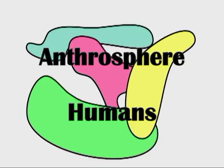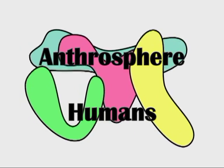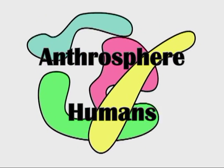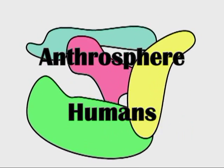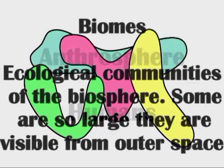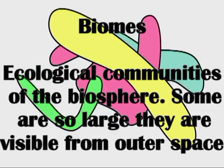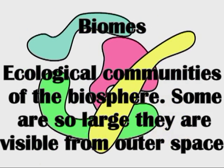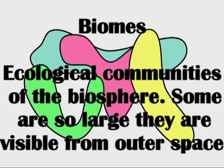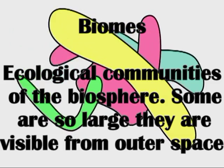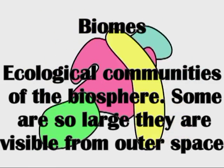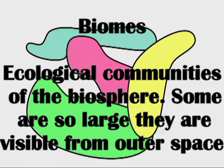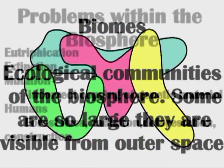A subsphere of the biosphere is the anthrosphere, which includes all of the humans. Biomes are the ecological communities of the biosphere — grasslands, deserts, and rainforests are some examples. Some biomes are so big that they are visible from space.